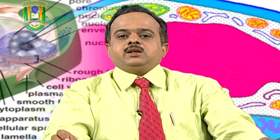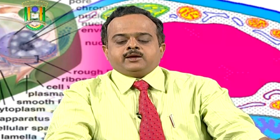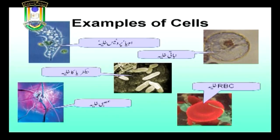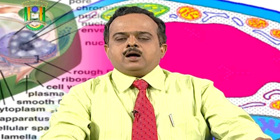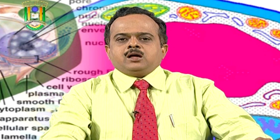چلیے اب آپ کو چند خلیوں کے سلائیڈز بتا رہے ہیں۔ اوپر کے دائیں جانب ایک نباتی خلیہ کا سلائیڈ ہے اور بائیں جانب امیبا پروٹیس کا خلیہ ہے۔ درمیان میں جو نظر آ رہا ہے یہ بیکٹیریا کا خلیہ ہے۔ نچلے جانب دائیں طرف پستانیوں کے آر بی سی کا خلیہ ہے اور بائیں جانب ایک عضوی خلیہ ہے۔